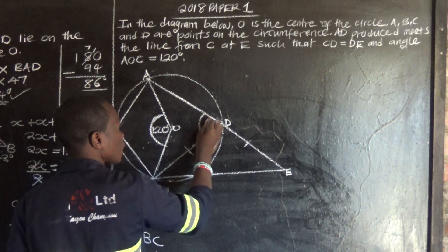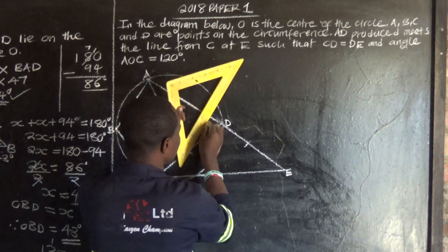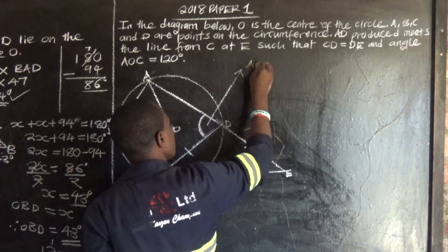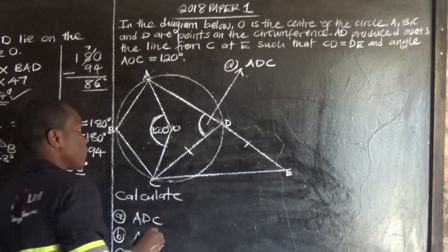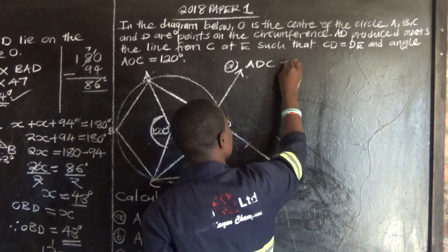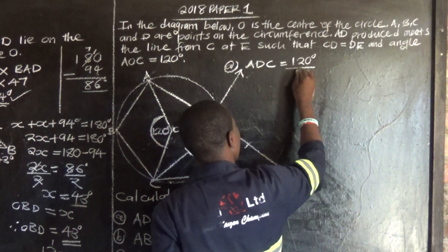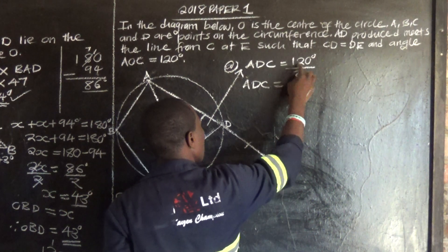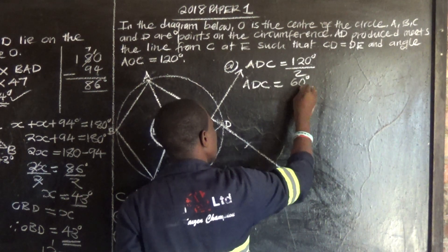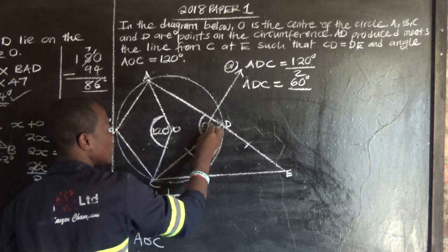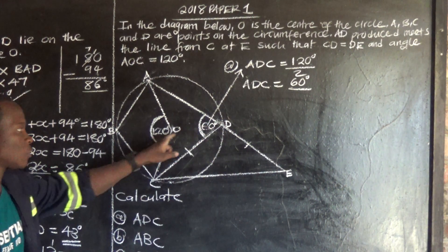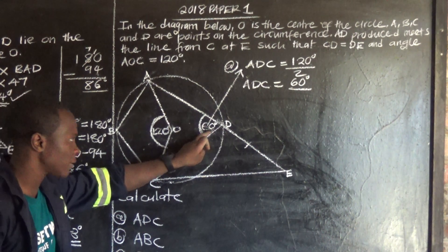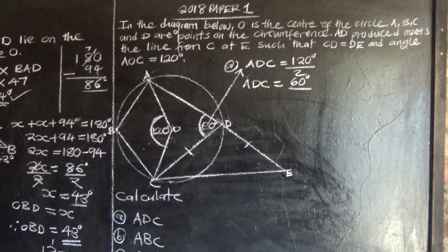So, finding angle ADC, which is the angle on the circumference: ADC is equal to 120 degrees divided by 2, which gives us 60 degrees. So angle ADC is 60 degrees. You can verify: 60 multiplied by 2 gives you 120, which is the angle at the center.